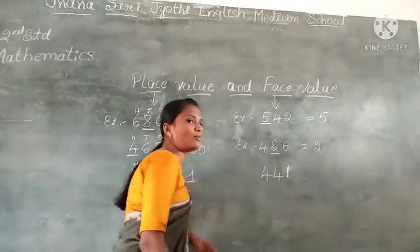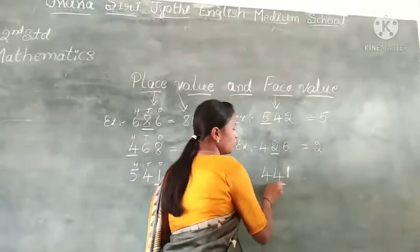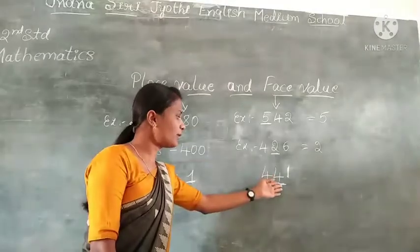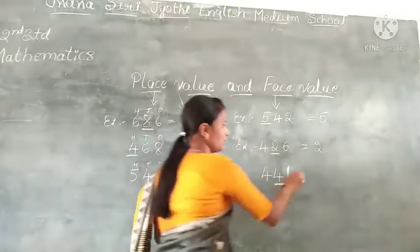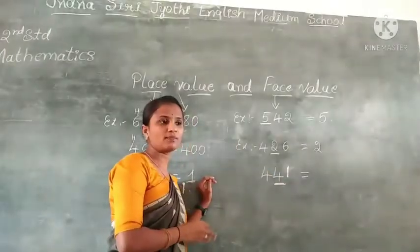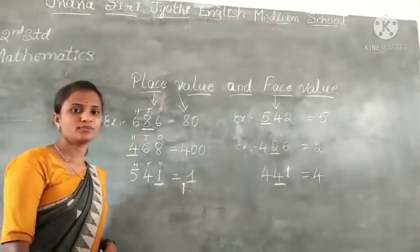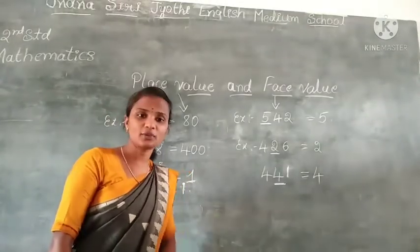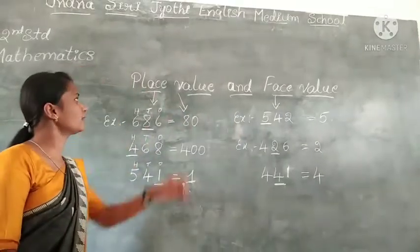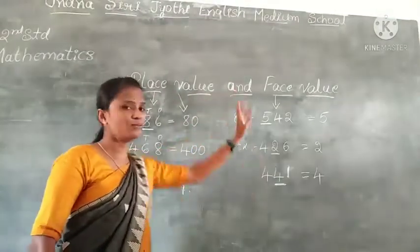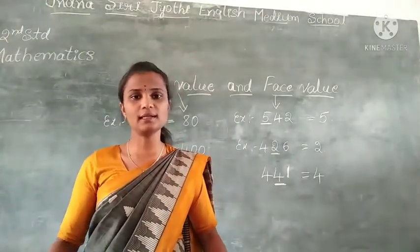Next, what is the face value of 4? The face value of 4 is 4. Don't write 40 — write 4 only, because we are talking about face value. The face value is always the actual digit itself. Children, I hope you all understand the concept of place value and face value. In the next class, I will come with more topics related to this lesson.